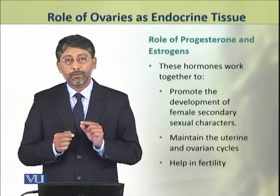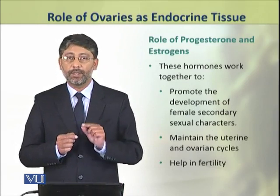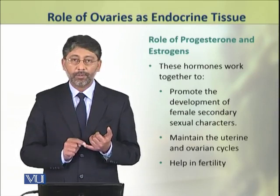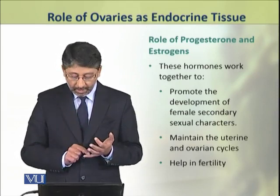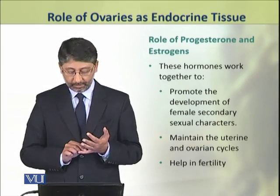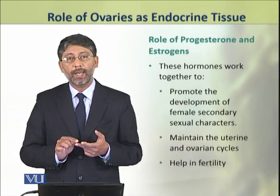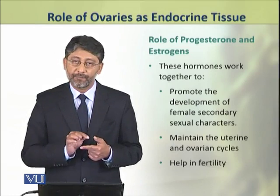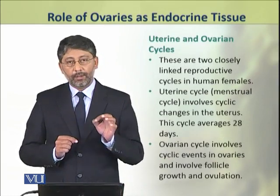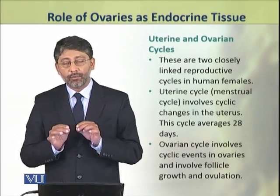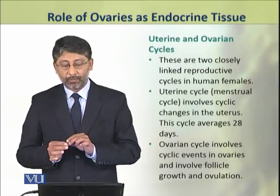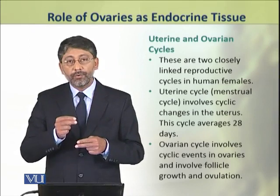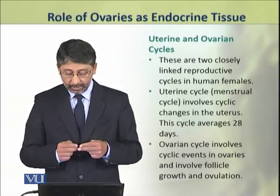We shall discuss the role of progesterone and estrogens in detail. These hormones work together to promote the development of female secondary sexual characters. They also maintain the uterine and ovarian cycles and help in fertility of the female. We shall discuss the role of these two hormones in the uterine and ovarian cycles, which are two linked reproductive cycles in human females.